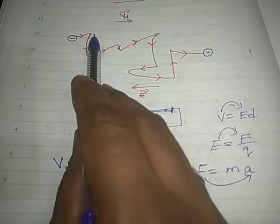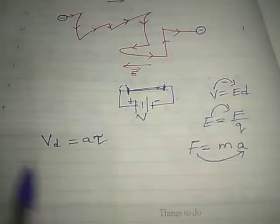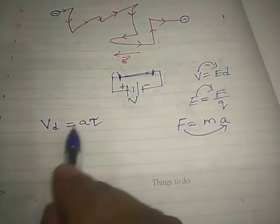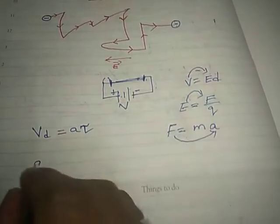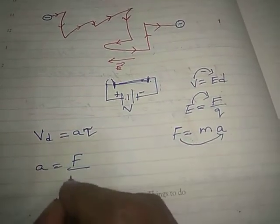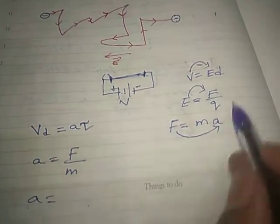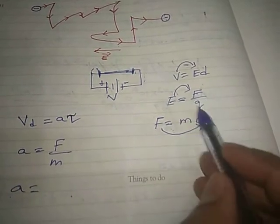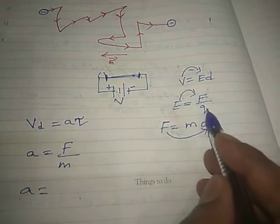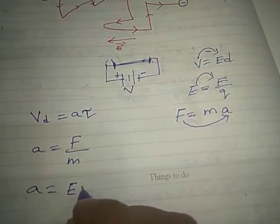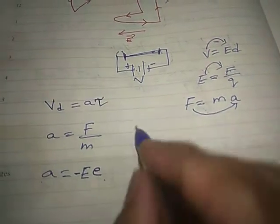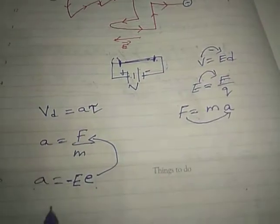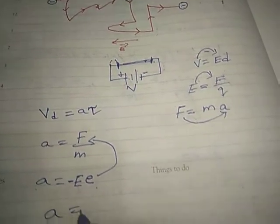Now, Vd is equal to a times tau. To find the value of a, we use F is equal to ma, so a is equal to F by m. And F is equal to EQ, where E is the electric field and Q is the charge. The charge of an electron is negative, so a is equal to minus eE by m.